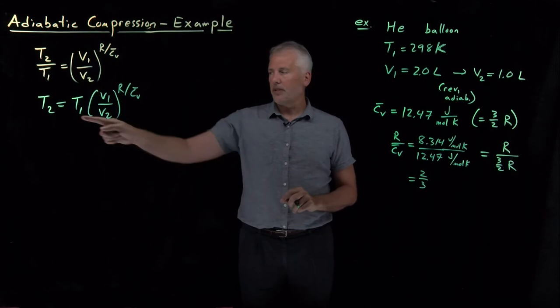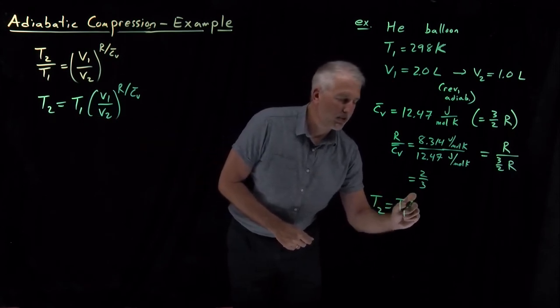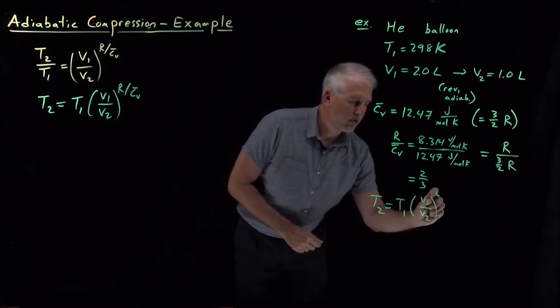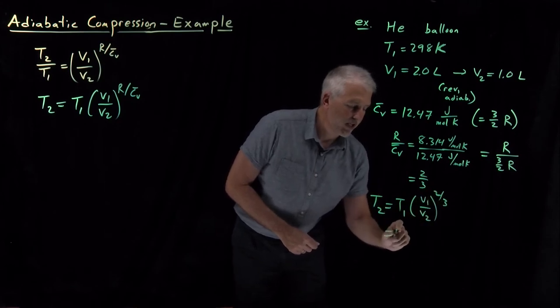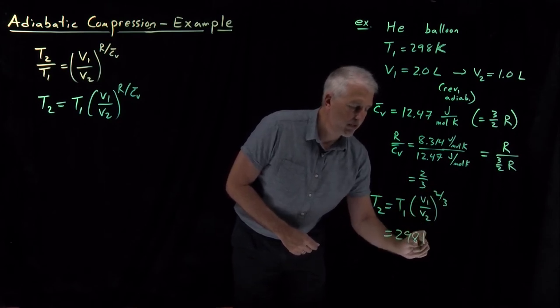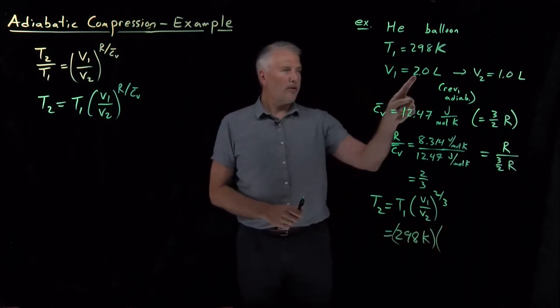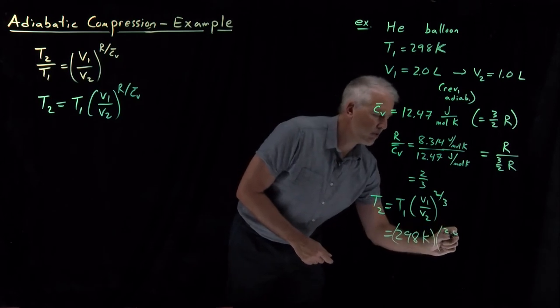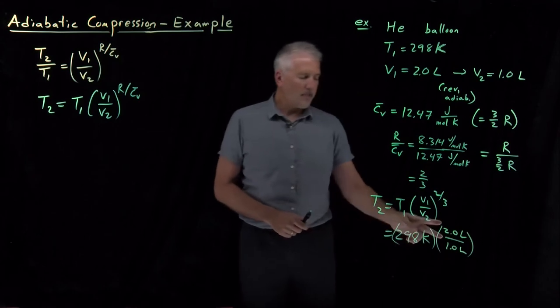So what that means is this expression becomes final temperature is equal to initial temperature times V1 over V2 to the two-thirds. For our gas, we started at an initial temperature of 298 Kelvin. Our volume change went from two liters down to one liter. So our ratio of volume is two liters over one liter, a ratio of two.